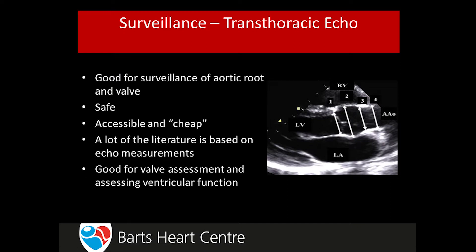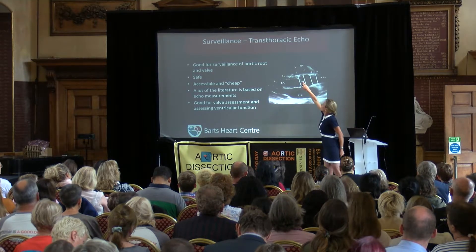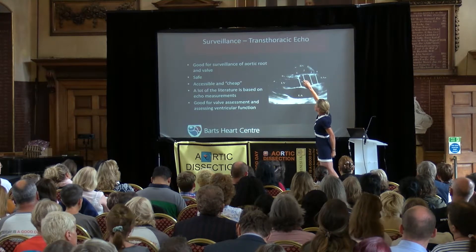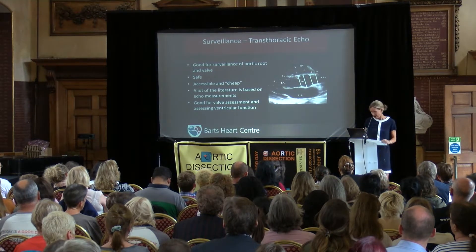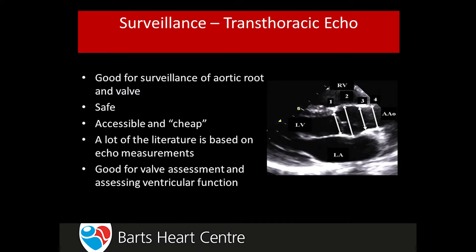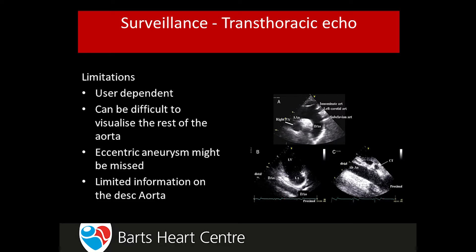For those unfamiliar with echo: here you can see the aortic valve, the base of the aorta — the sinuses of Valsalva — and the ascending aorta coming out of the left ventricle. You can see how we make our measurements. Whilst this is a good method for following up the base of the aorta — useful for Marfan-type phenotype where that area tends to be dilated — it's not as good for following up the rest of the aorta, and certainly not good enough for patients who've had a previous dissection.